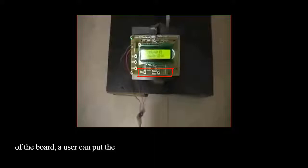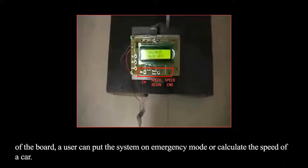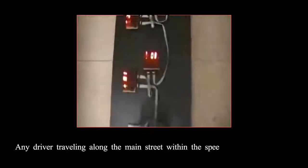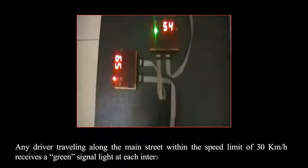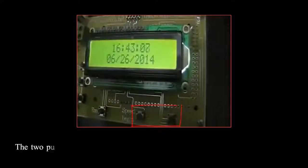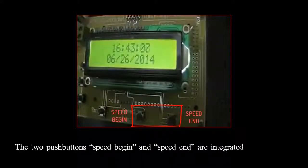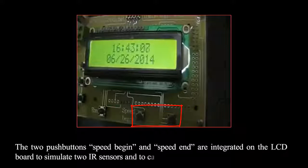Any driver traveling along the main street within the speed limit of 30 kilometers per hour receives a green signal light at each intersection. The two push buttons, speed begin and speed end, are integrated on the LCD board to simulate two IR sensors and to calculate the speed of any passing car based on a predefined distance of 100 meters using the speed equation in the video.